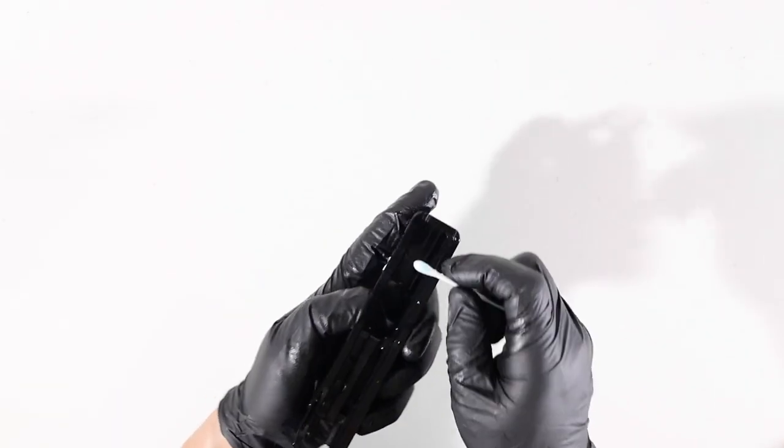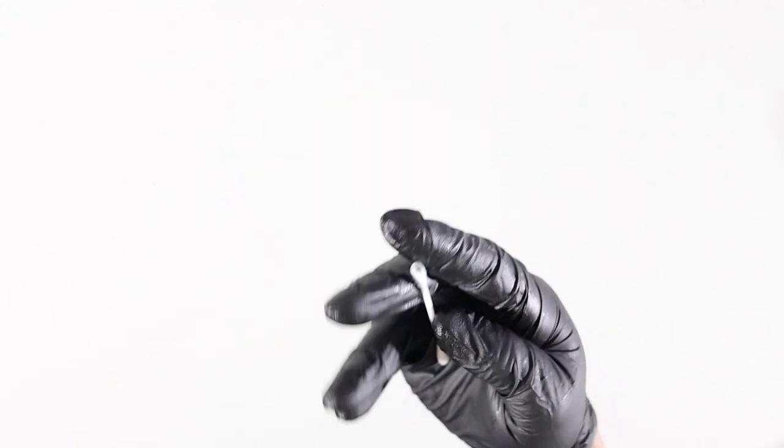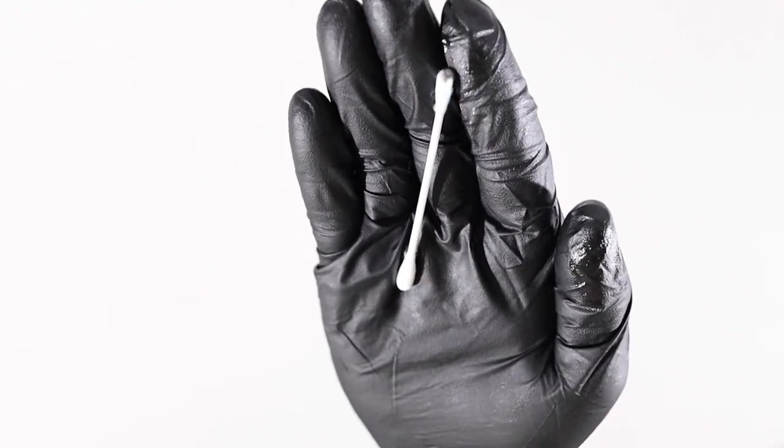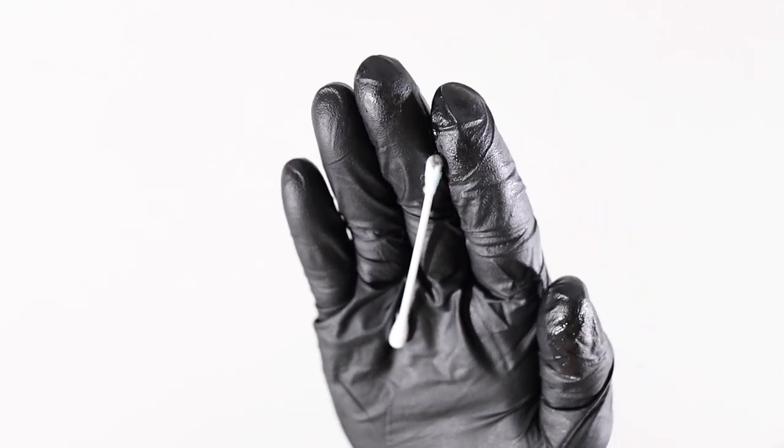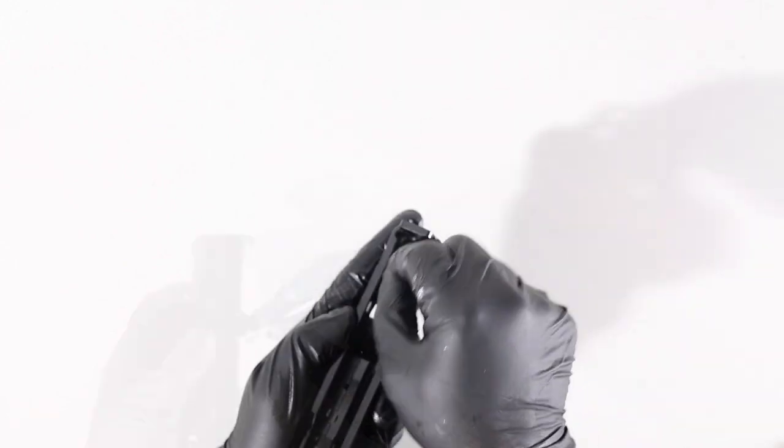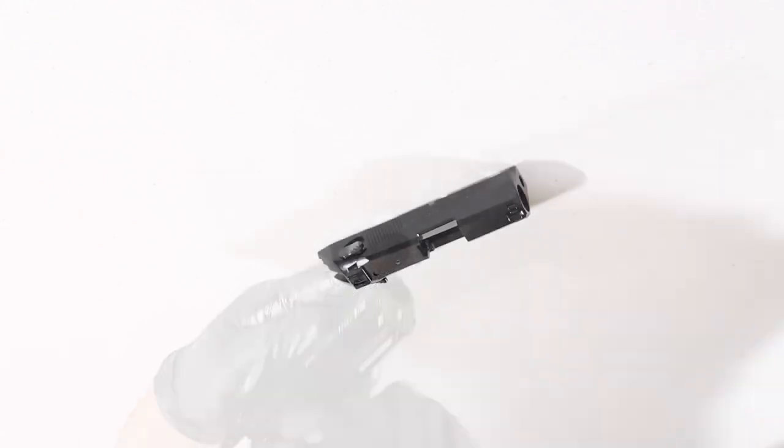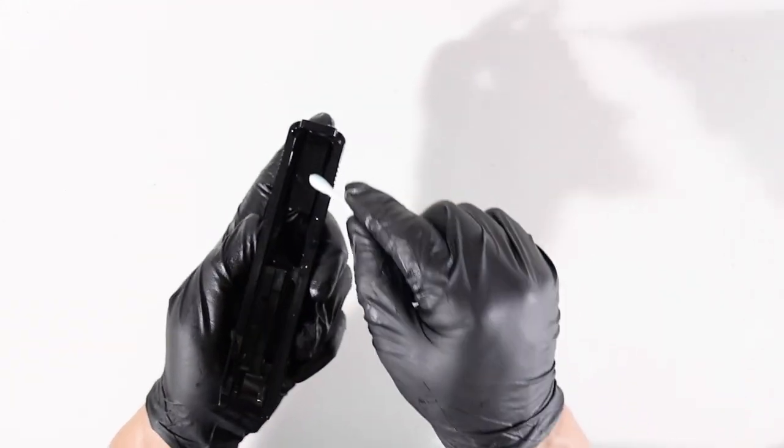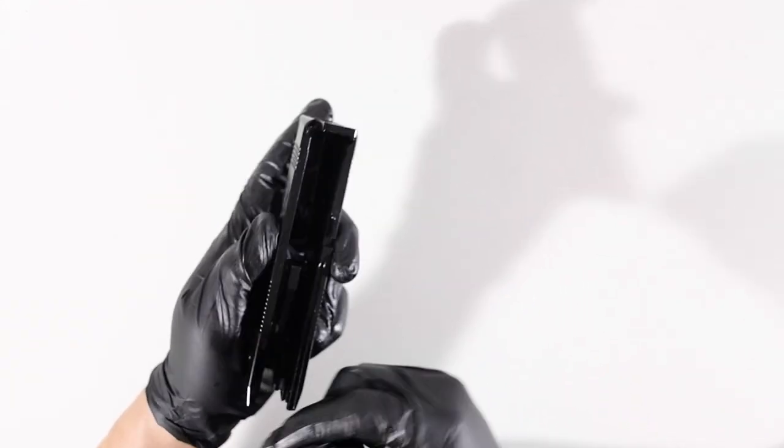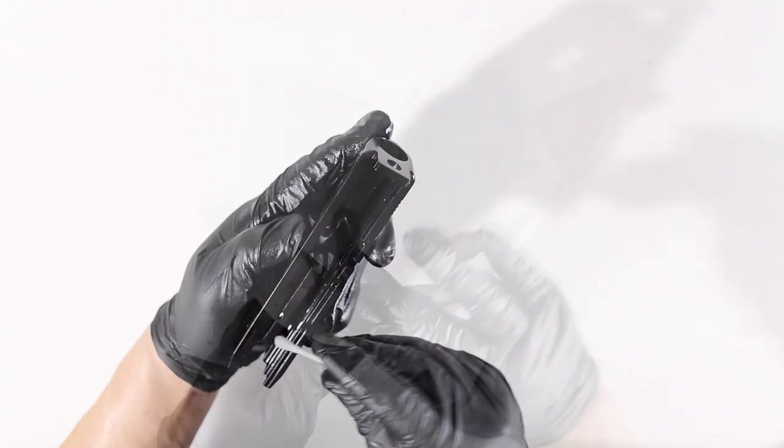You'll see as you run clean cotton swabs through the rails, they'll come out dirty. Just continue running clean cotton swabs through until they start to come out clean. After the slide is totally clean, add a medium coat of CLP to the rails, as well as anything else that you see evidence of metal on metal wear. Now wipe off the excess CLP with your microfiber rag and you're done with the slide.